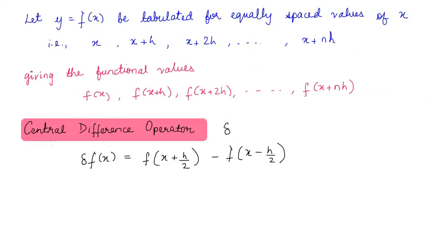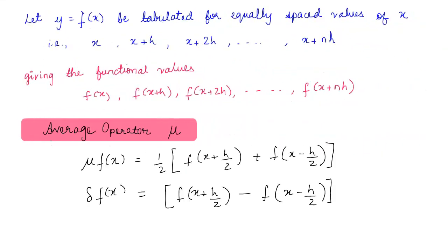Let us revise what we studied today. Given a function tabulated for equally spaced values of x with functional values f(x), f(x+h), up to f(x+nh): the central difference operator is denoted by delta and defined as delta f(x) equals f(x+h/2) minus f(x-h/2); the average operator is denoted by mu and defined as mu f(x) equals (1/2)[f(x+h/2) plus f(x-h/2)]. In the next class, we will study the relations between all these operators. Thank you for watching, see you in the next class.